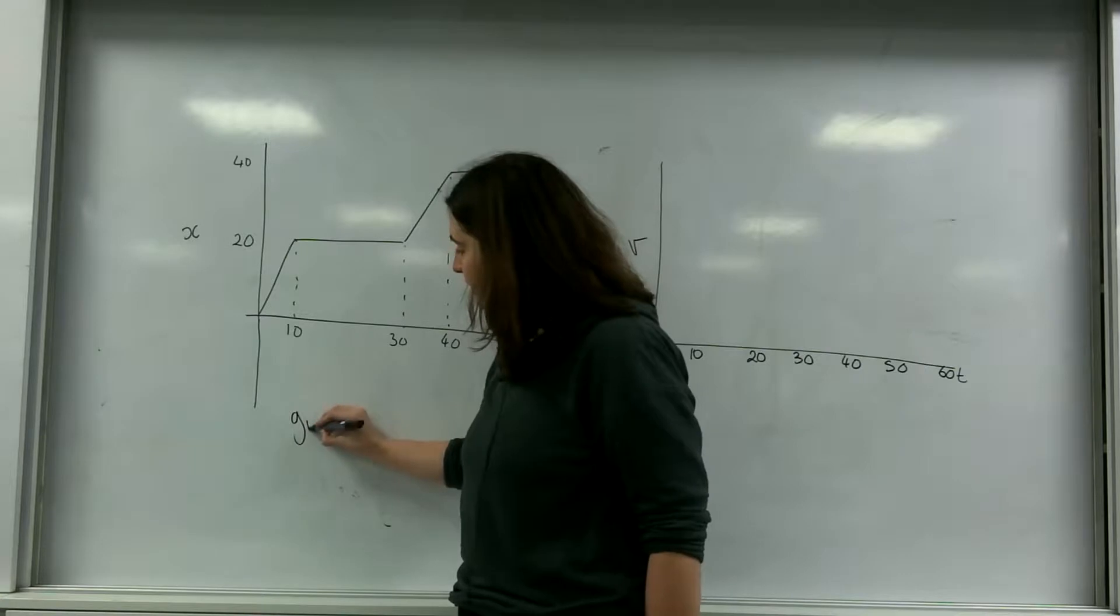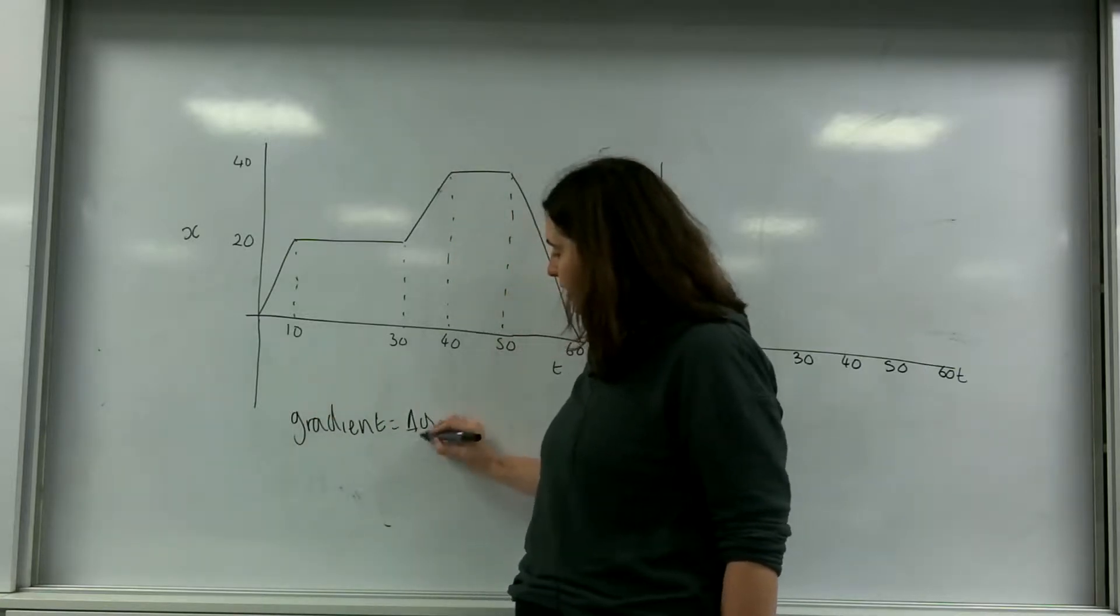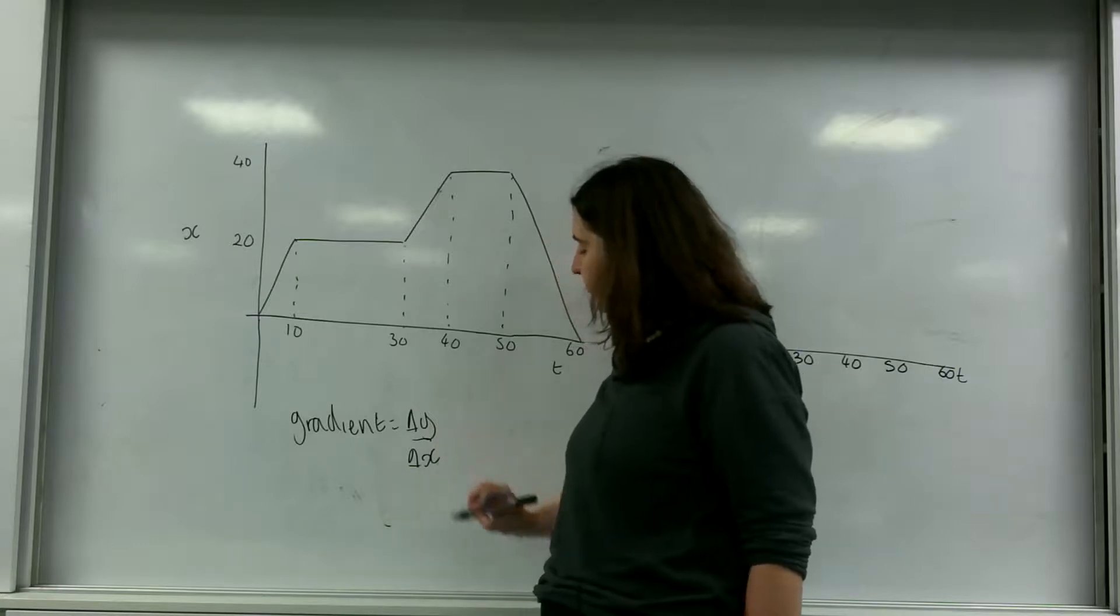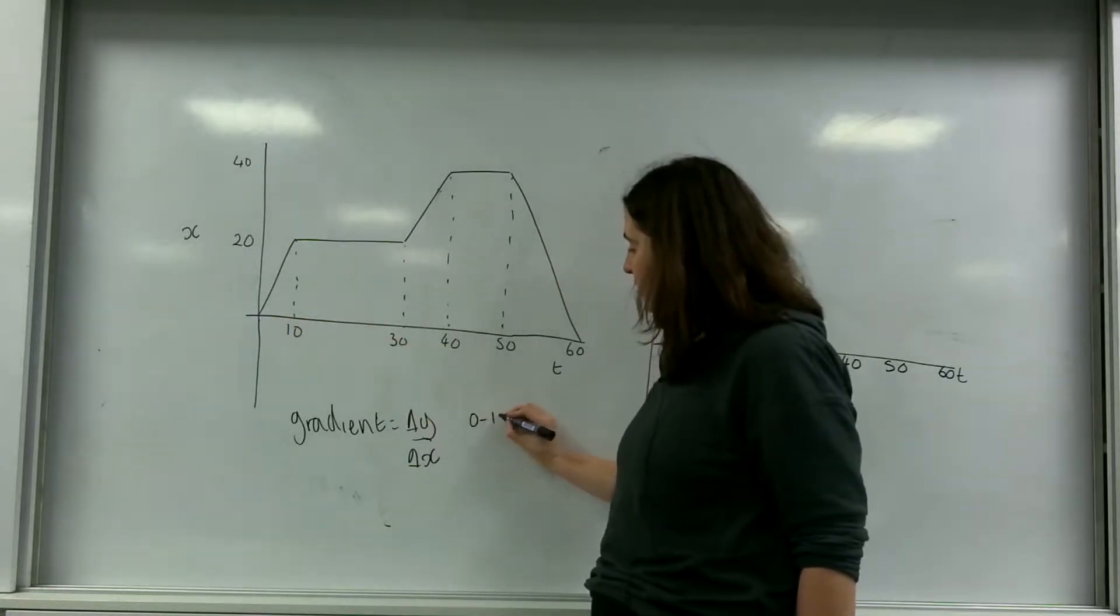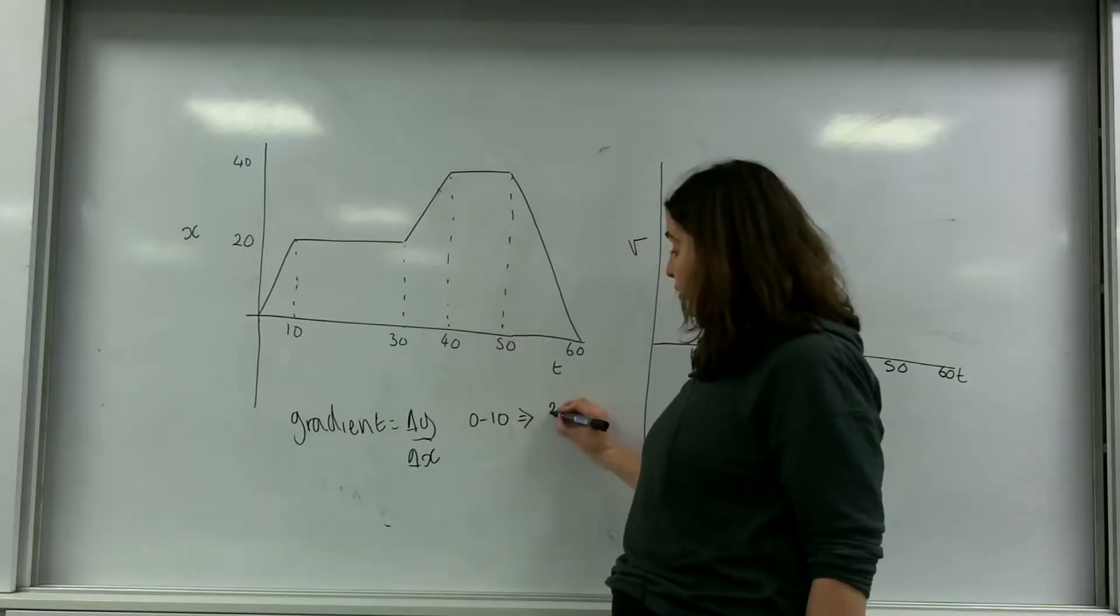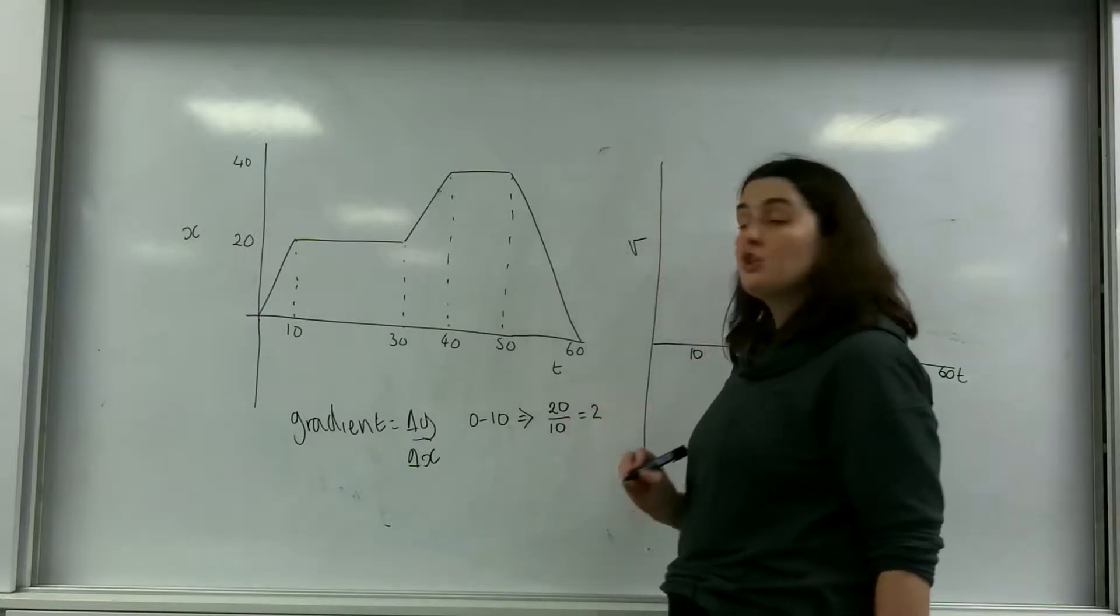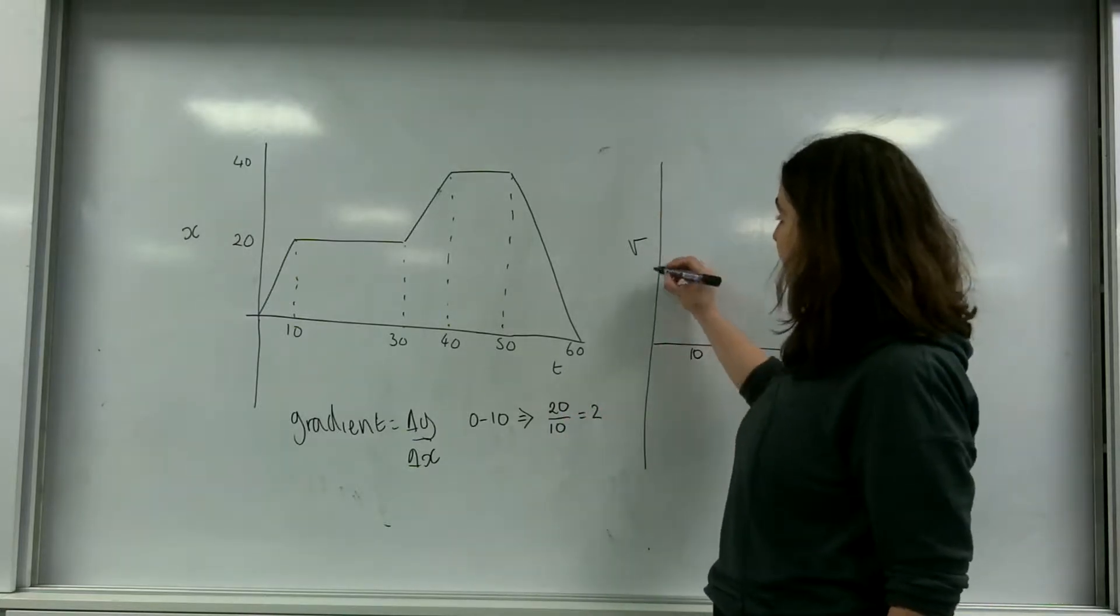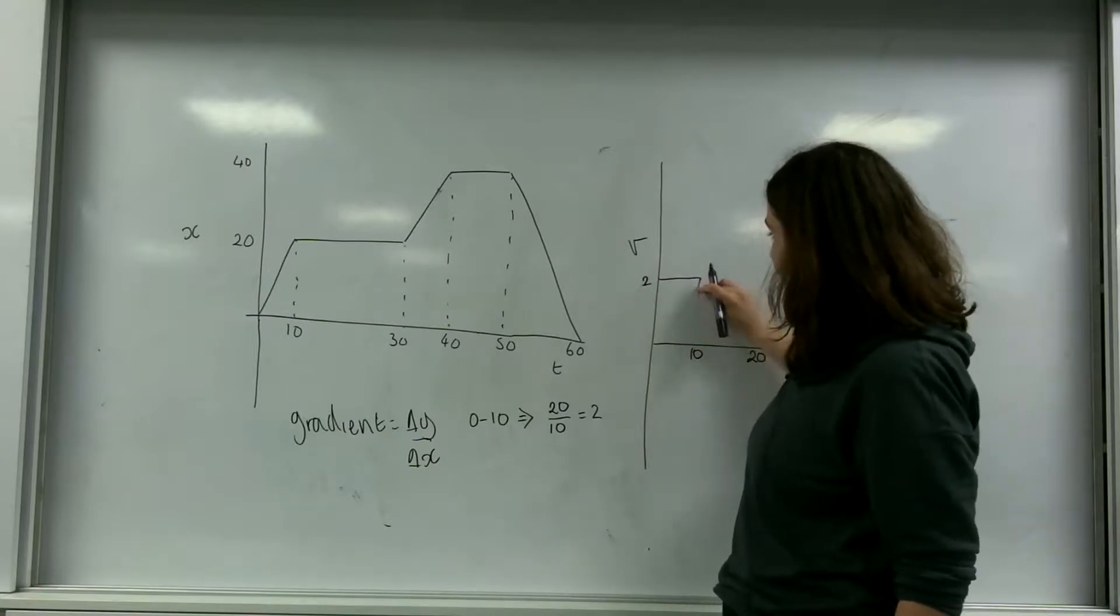So gradient is the change in y over the change in x. So between 0 and 10 seconds my gradient would be my change in y which is 20, divided by 10 which would be 2. So between 0 and 10 seconds my velocity would be 2.